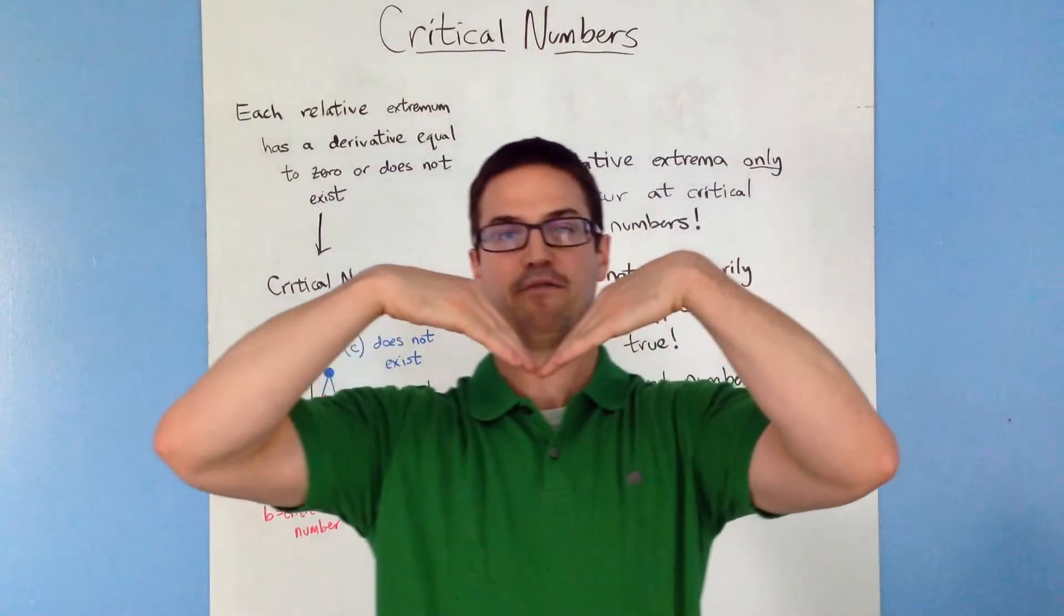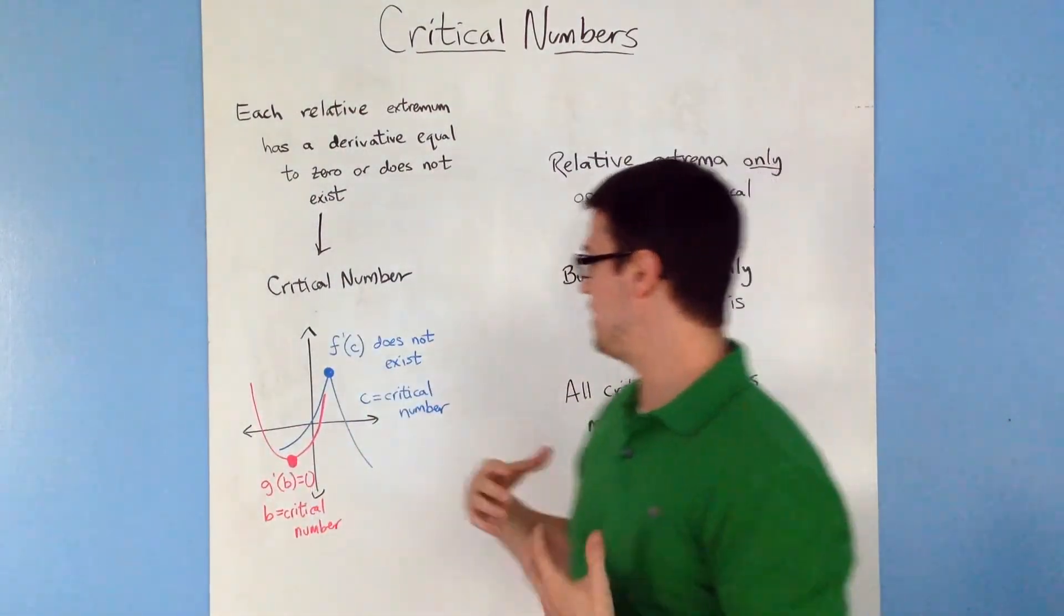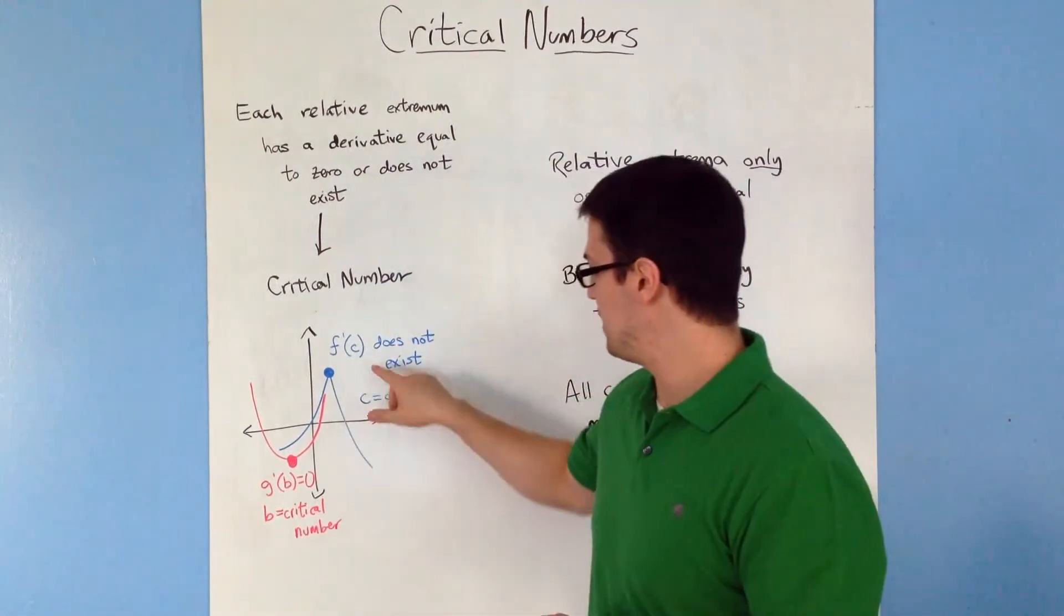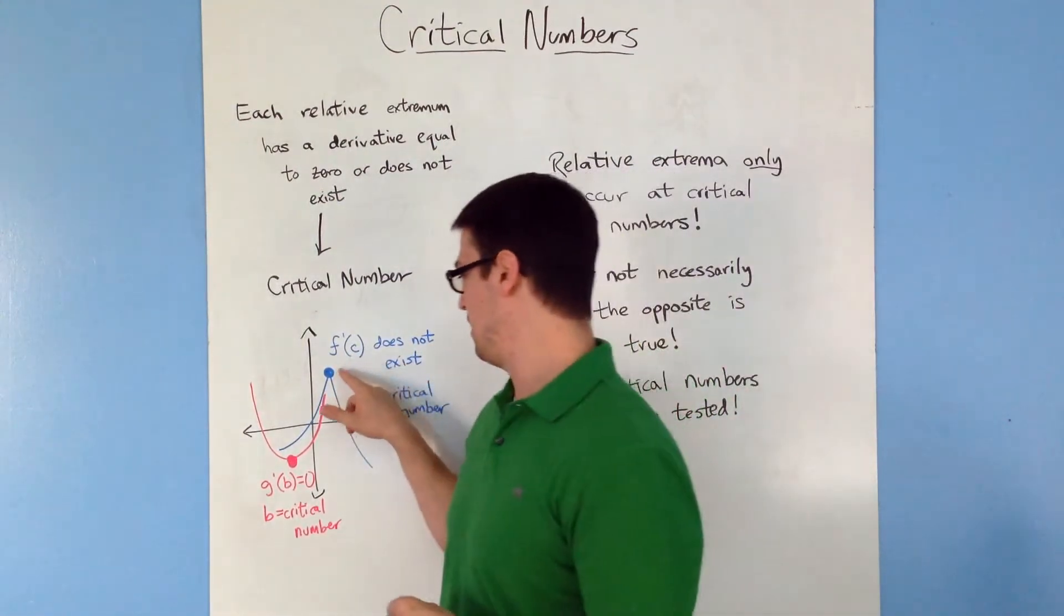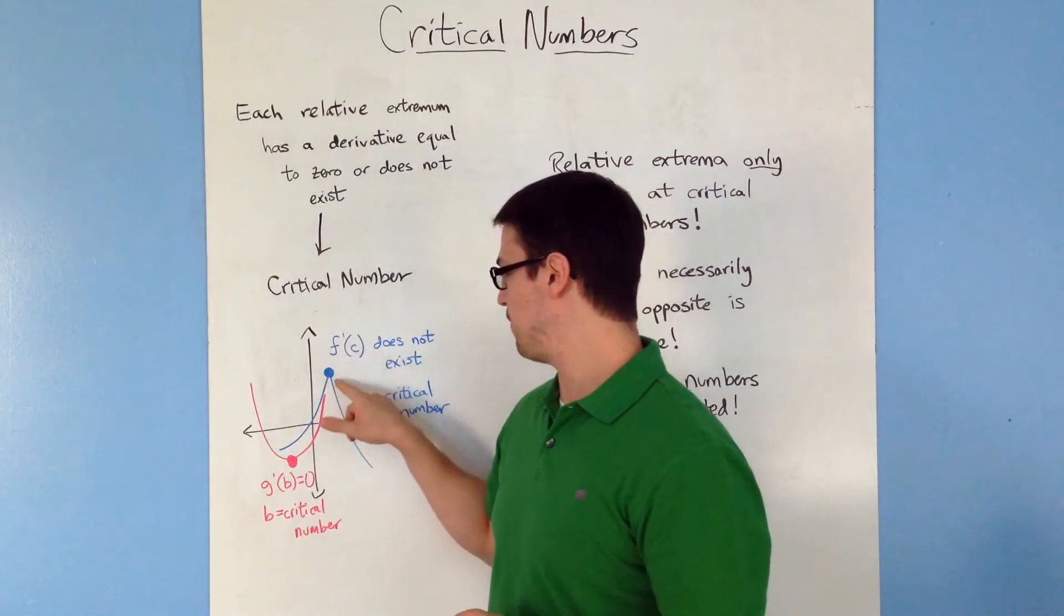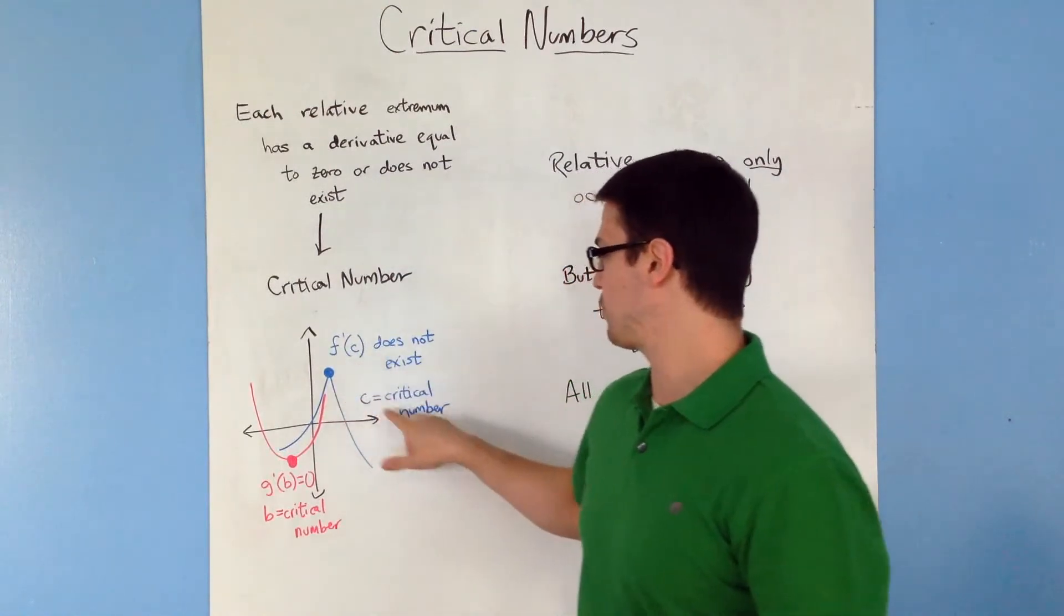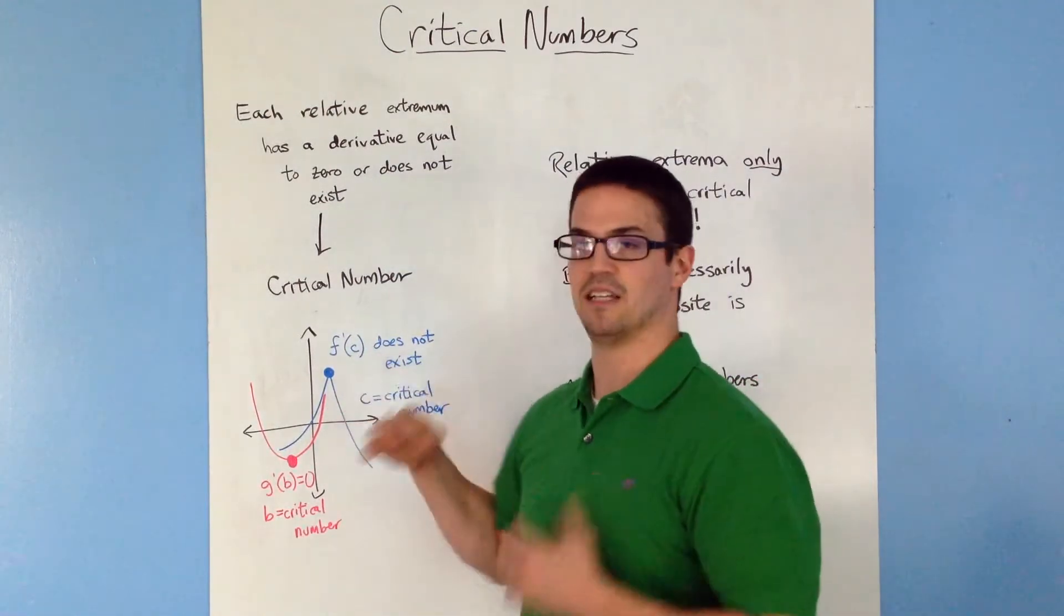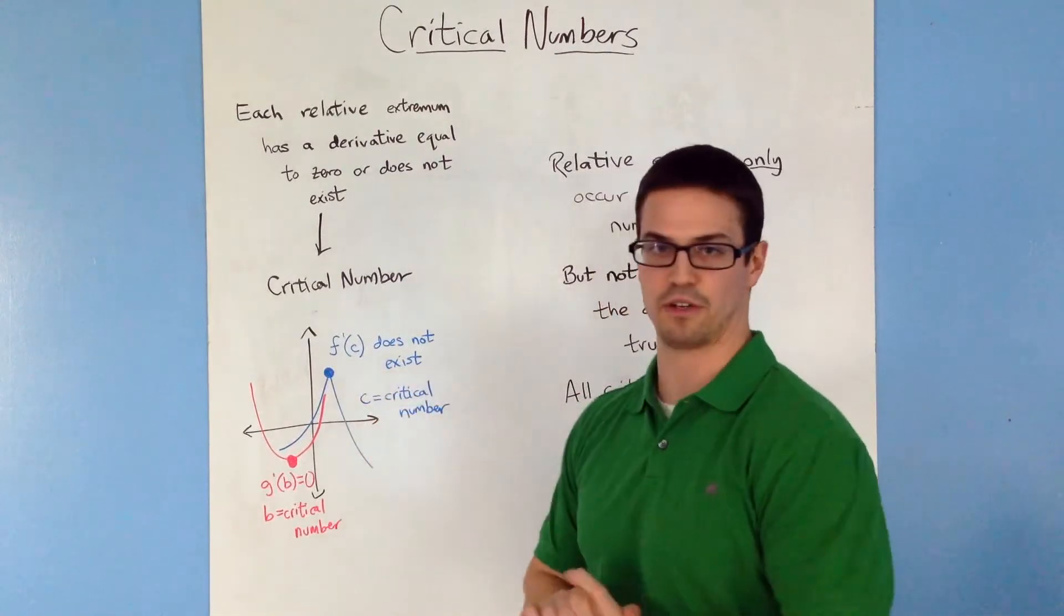Just think the absolute value when it's that v, that bottom part, that min, the derivative does not exist. And that c value that you have to plug in to this function, the f prime function, is called the critical number. So f prime of c does not exist. That c is the critical number.